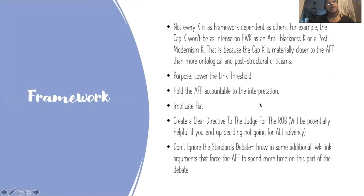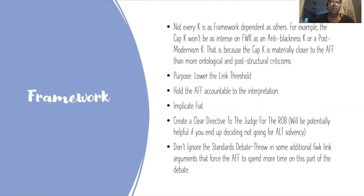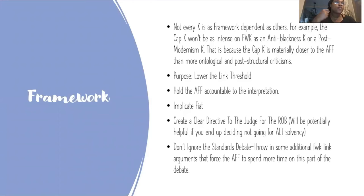Next is framework — my favorite. Not every K is as framework dependent as others. For example, the cap K won't be as intense on framework as an anti-blackness critique or postmodernism critique, because the cap K is materially closer to the affirmative than more ontological and post-structural criticisms. The amount of immateriality of the argument is less, and therefore the framework argument is needed less — but still needed to make arguments for why the threshold for holding the affirmative accountable for capitalist undertones is necessary and important in its application to debate.